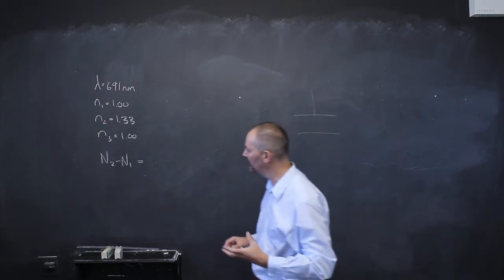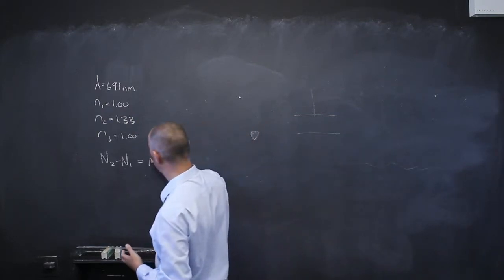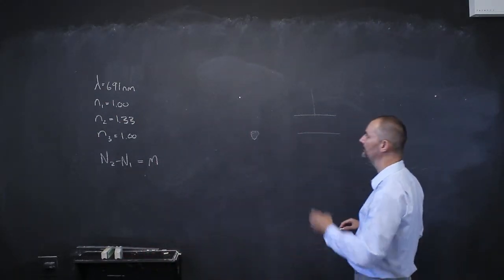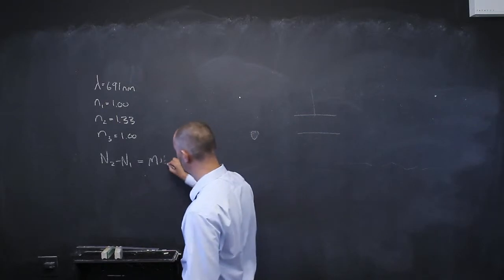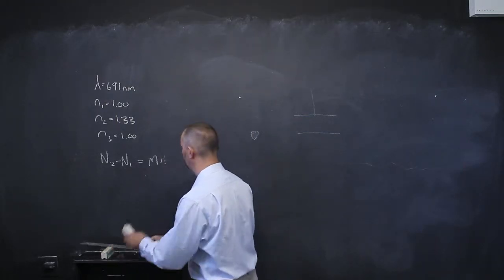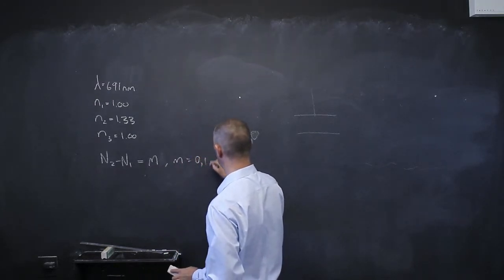So what does that tell me? If I want to see this, it means that N2 minus N1, if that equals M, it's going to be M if I see bright light. If I see black light, it's going to be M plus a half. But they say bright light, so we're just talking with M, and then N equals from 0 to 1 to 2.